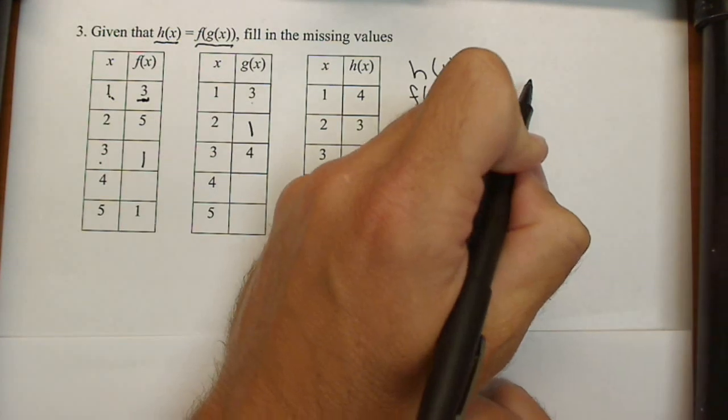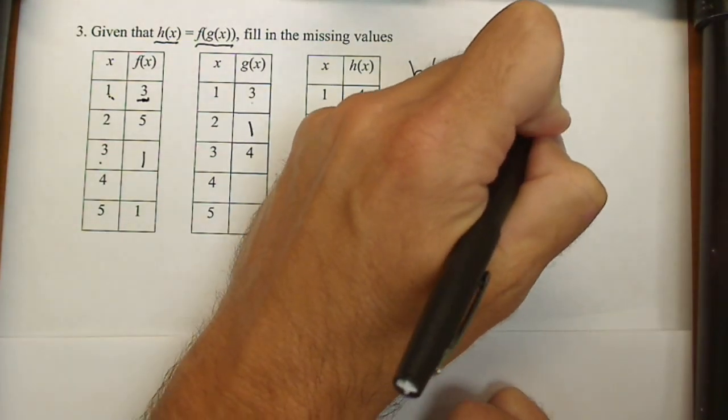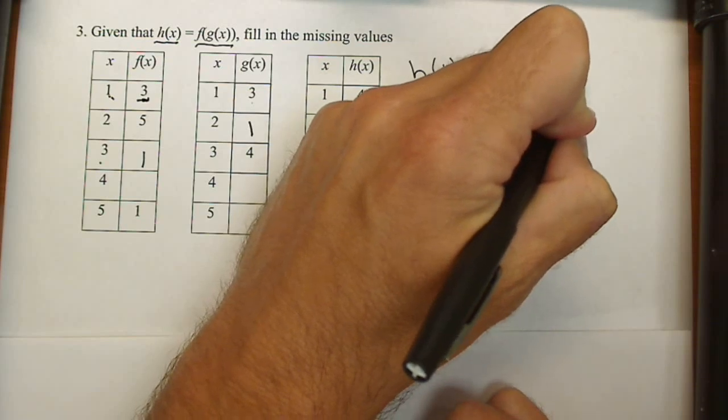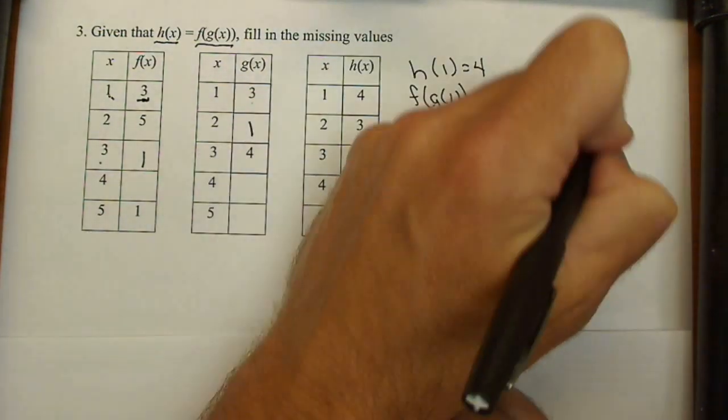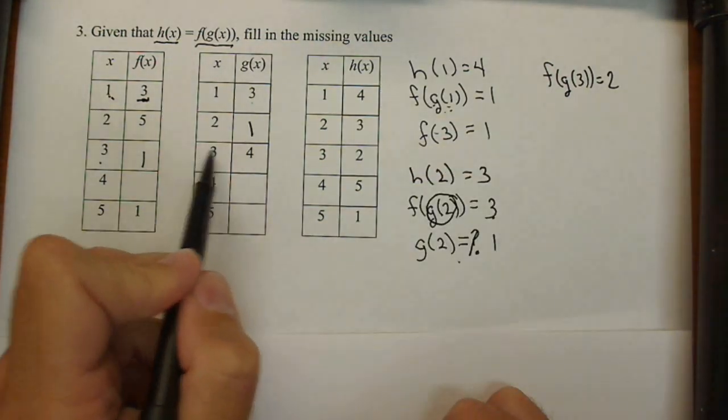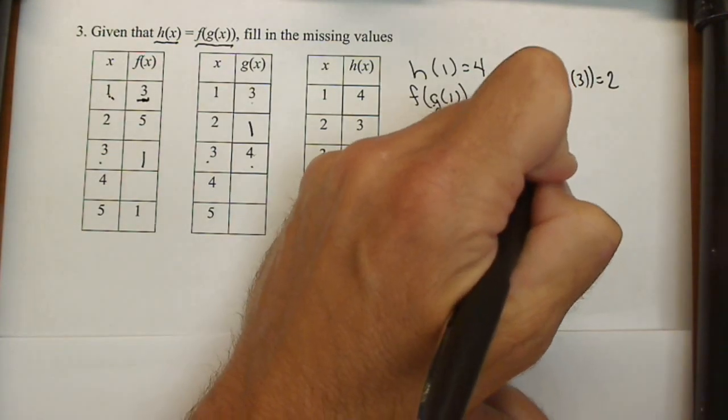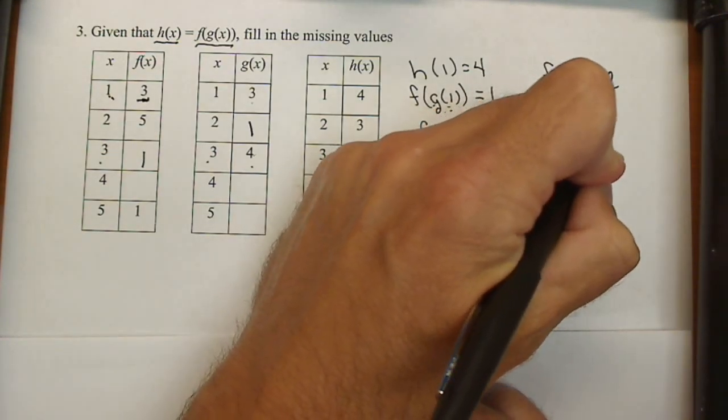Next we have h(3) equals 2, so I'm just going to skip that first step: f(g(3)) equals 2. Well, g(3) is 4 - we actually have it right here - so f(4) must equal 2.